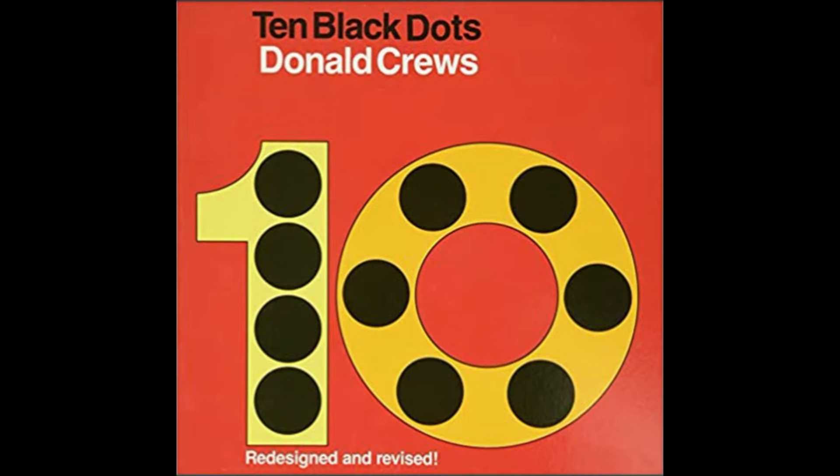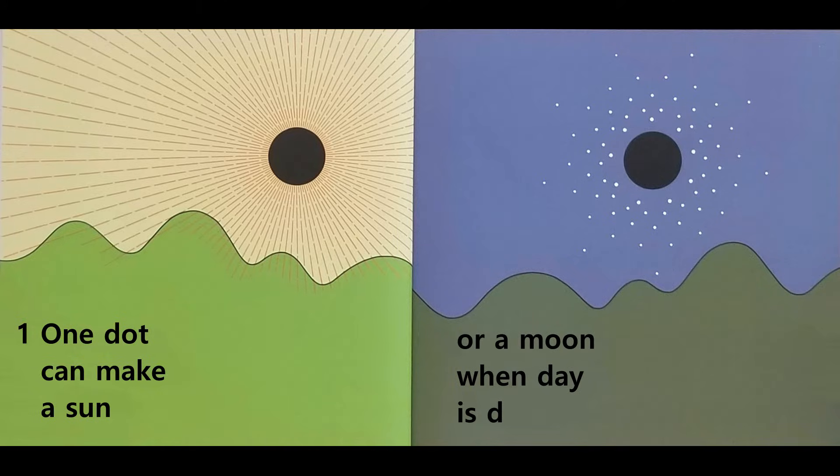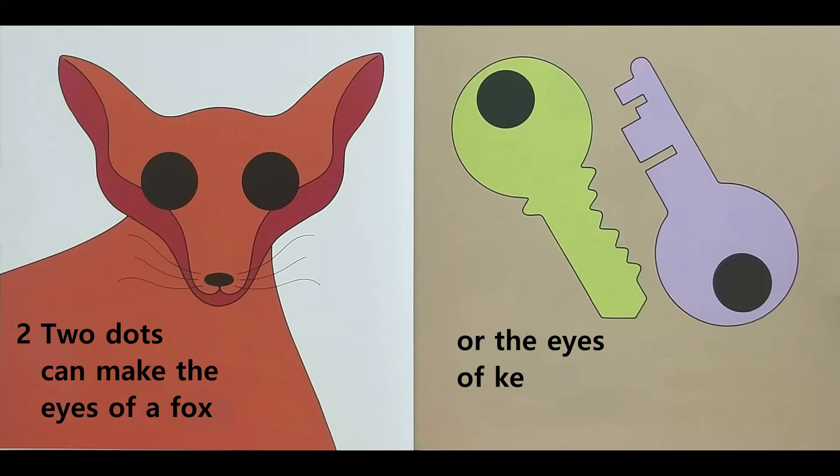10 Black Dots by Donald Cruz. What can you do with 10 black dots? One dot can make a sun or a moon when day is done. Two dots can make the eyes of a fox or the eyes of keys that open locks.